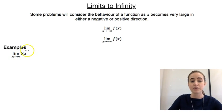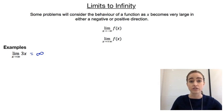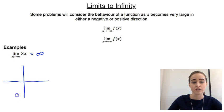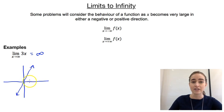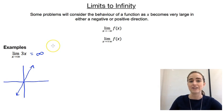So the limit as x approaches infinity of 3x will be equal to infinity, because it just keeps getting bigger. If we think about what that looks like graphically — if we've got our x and y-axes, 3x is just a straight line with gradient 3, going through the origin. So as our x increases and moves towards infinity, that line just keeps going up forever. The limit as x approaches infinity is just infinity, because there is no limit — there's no bound to that.